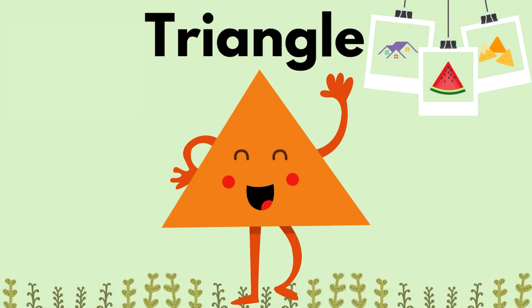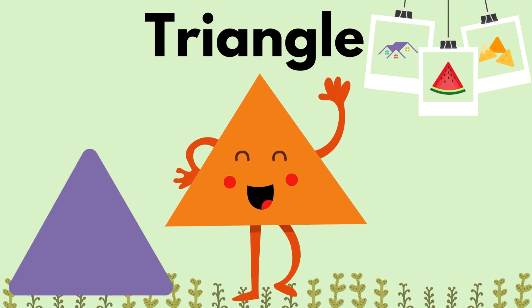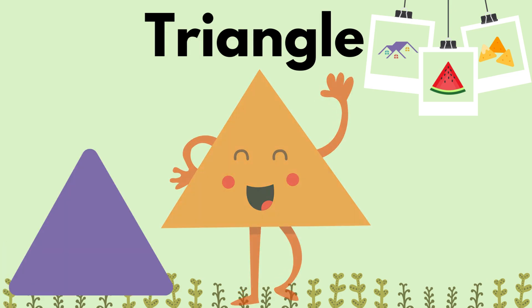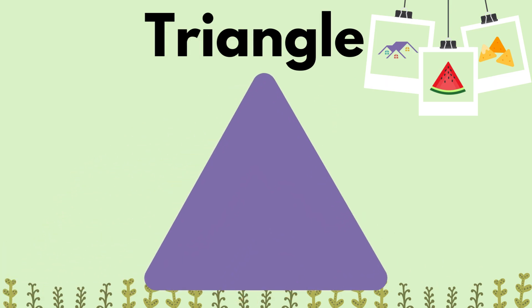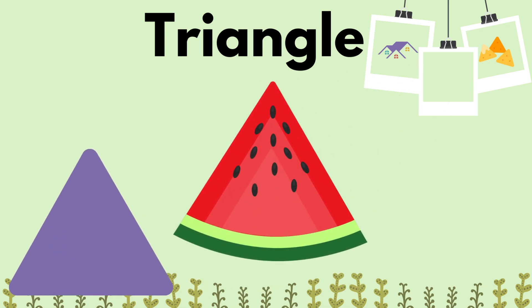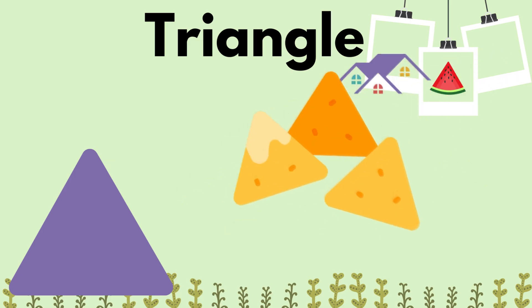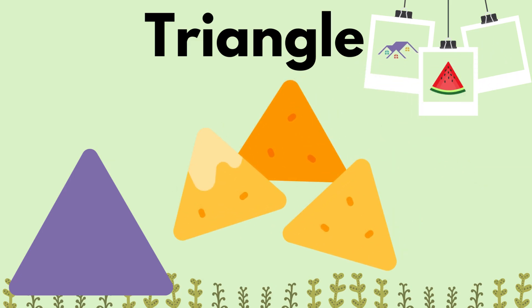Triangle. A triangle has three sides. Examples of triangles: Watermelon Slice, Roof, Nacho Chip.